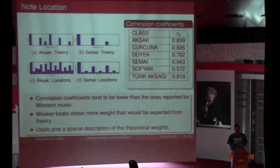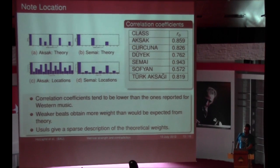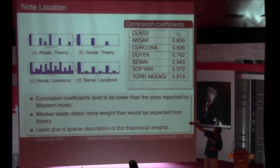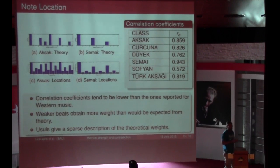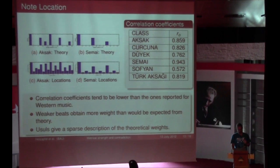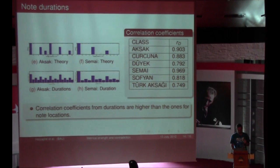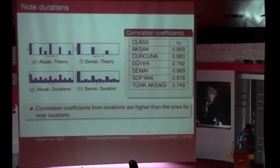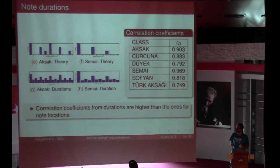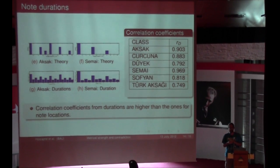For example, for the Aksak, the 5th stroke in theory is quite a bit lower, but the appearances at that time instance we measured were quite high — so there's a deviation upward for the less-strong beats in the Usul. For durations, interestingly, the correlations are even higher. We can clearly see that when we have a strong stress in the Usul, those strong stresses are correlated very strongly with higher note durations.